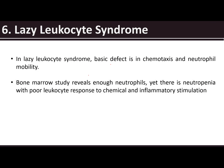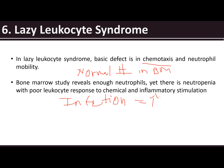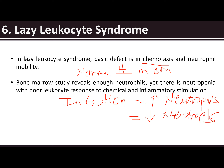We also have lazy leukocyte syndrome — a defect in motility or movement, especially chemotaxis. Bone marrow study reveals a normal number of neutrophils, yet there is neutropenia with poor leukocyte response to chemical and inflammatory stimulation. Normally, neutrophil numbers are normal in bone marrow and peripheral blood, but when there is an infection, instead of having increased neutrophils, there would be decreased neutrophils due to a defect in mobility.